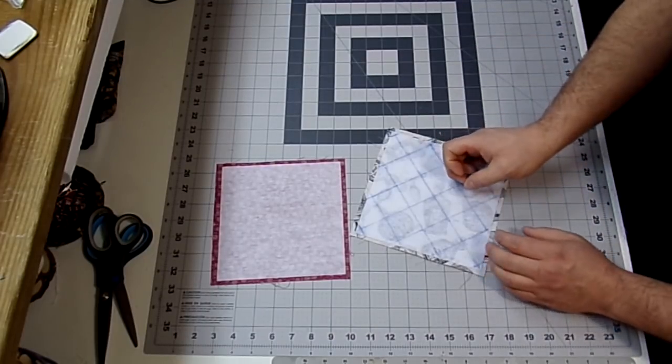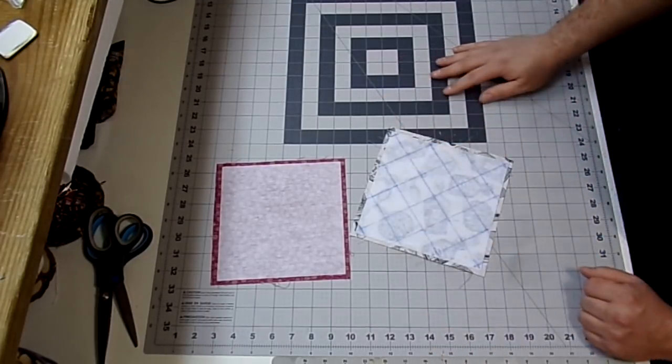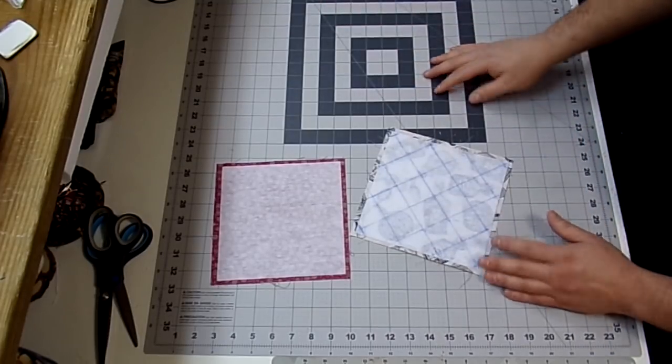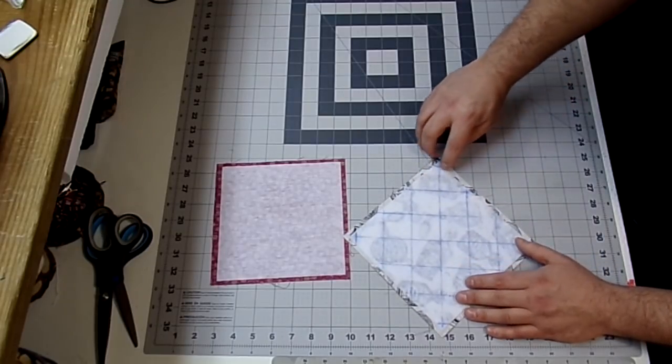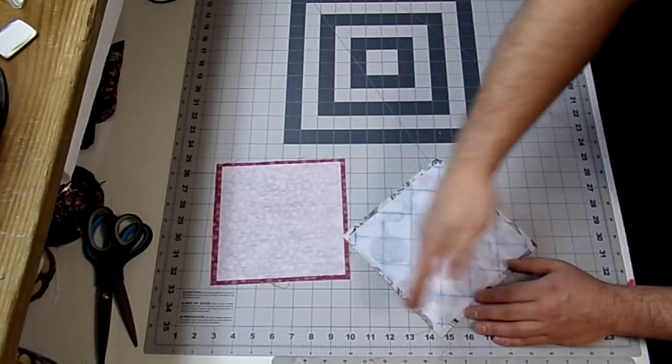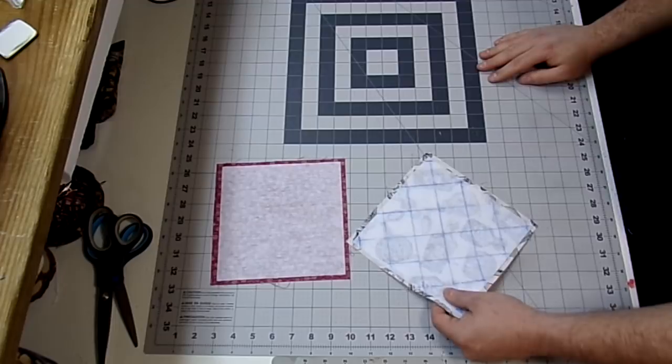But like I said, you could go smaller, you could go larger, you could crazy quilt this, you could just do lines, or you don't even have to quilt it at all. So now I'm just going to take this over to my sewing machine, and I'm going to sew directly on these lines. Meet you over at the sewing machine.